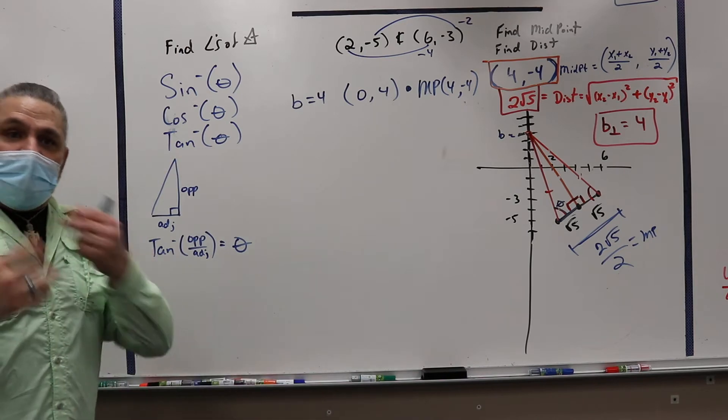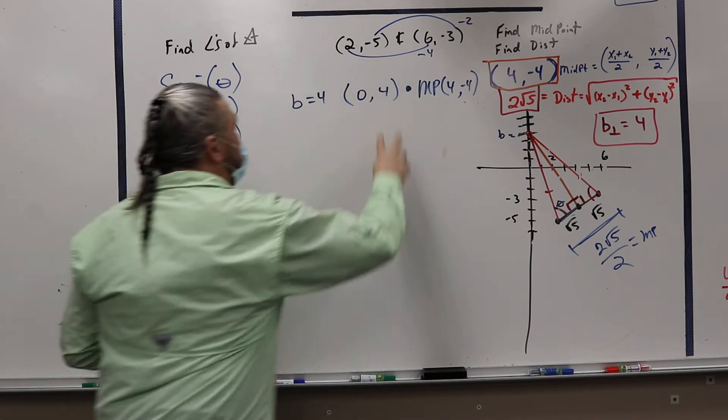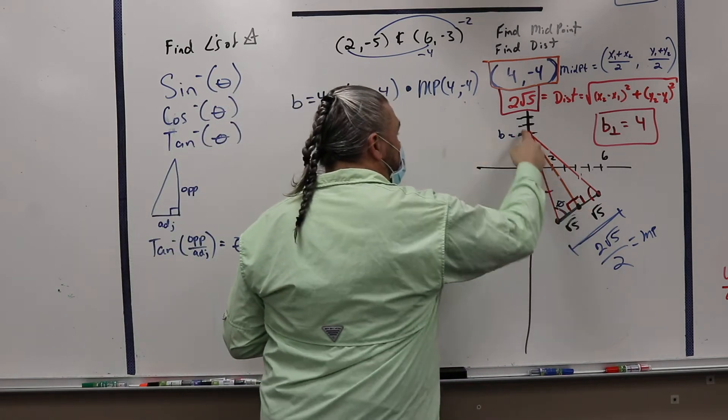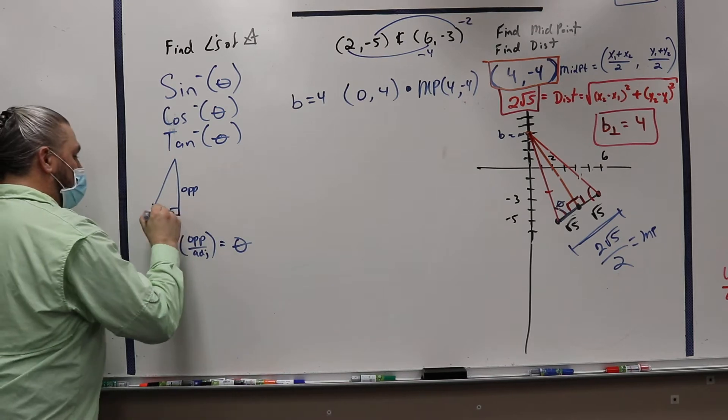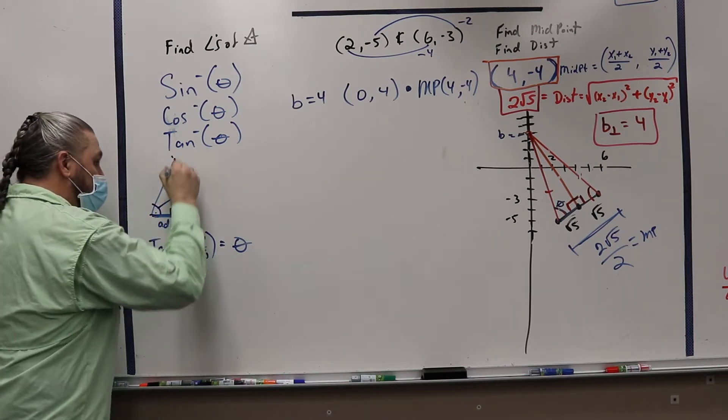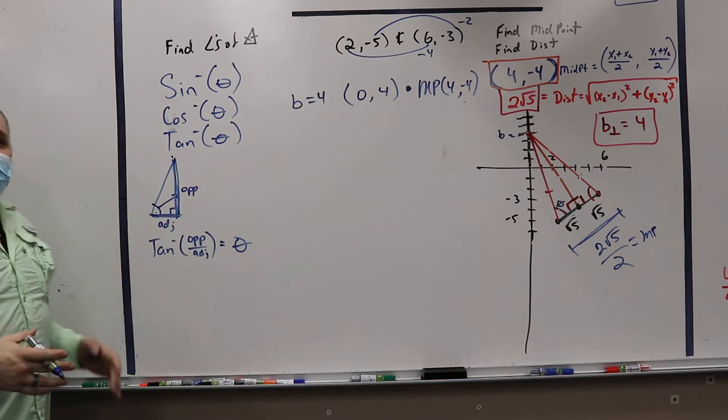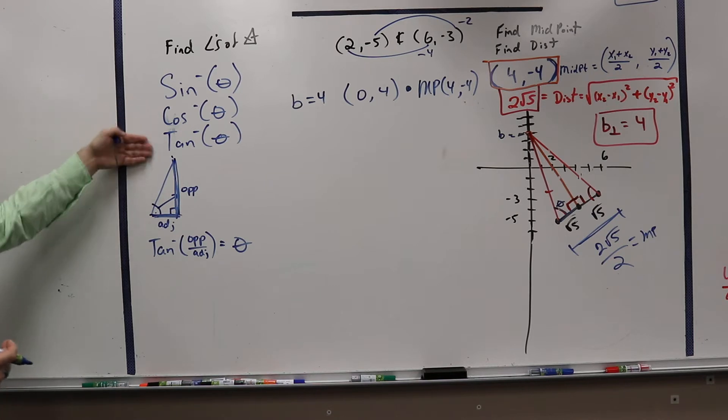So now we want to find that distance. And the reason why we want to find the distance between these two points is because then I will have the opposite side and the adjacent side. Right? And if I have the opposite side and the adjacent side, then which function am I going to use?